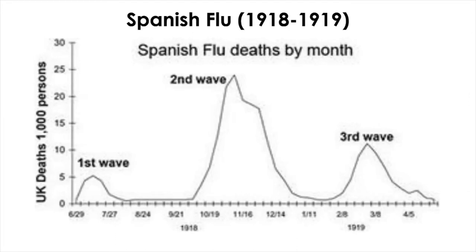Right after the First World War, the Spanish flu pandemic came and killed more than 50 million people worldwide — more than the number killed during the war itself. It was very powerful; people fell ill in the morning and died by nightfall. Quite unusually, it killed mostly young adults in their 20s and 30s. Normally, flu is fatal to vulnerable individuals such as infants, the elderly, or patients whose immune systems are already compromised.